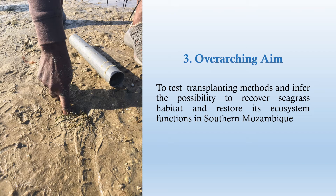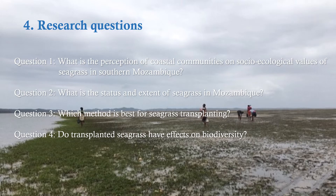The overarching aim is to test transplanting methods and infer the possibility to recover seagrass habitat and restore its ecosystem function in southern Mozambique. To achieve this goal, the following research questions were raised. Question 1: what is the perception of coastal communities on socio-ecological values of seagrass in southern Mozambique? Question 2: what is the status and extent of seagrass in Mozambique? Question 3: which method is best for seagrass transplanting? Question 4: do transplanted seagrasses have effects on biodiversity?